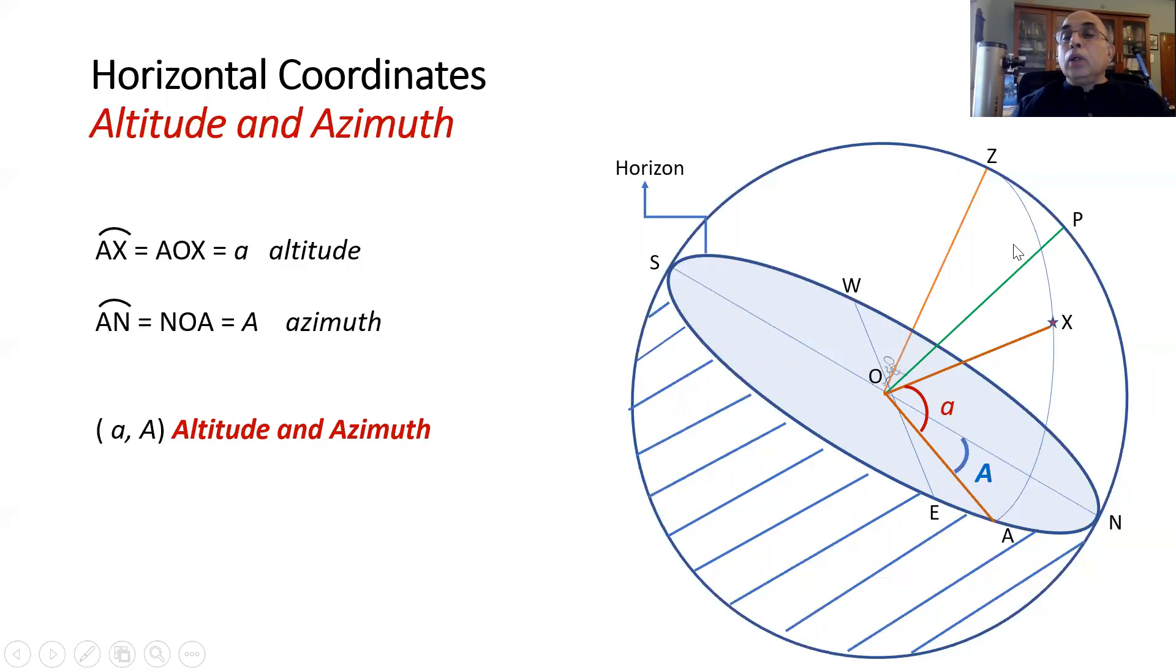The point is you have this object whose position you want to seek, denoted at X. You draw a great circle from the zenith via that object and see the point where it meets the horizon, and the angle AOX is the altitude and the angle AON measured in the horizontal plane gives you the azimuth.